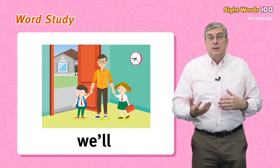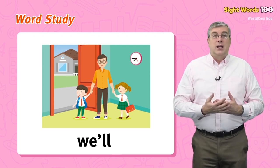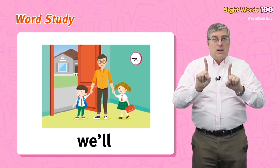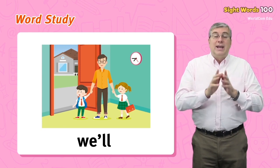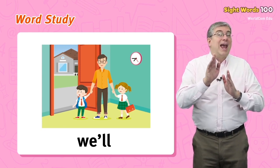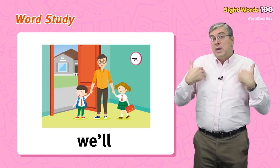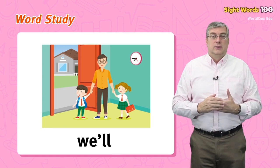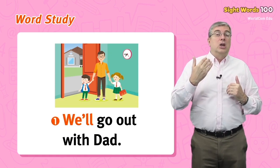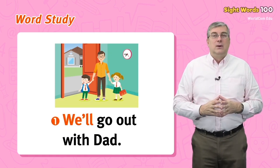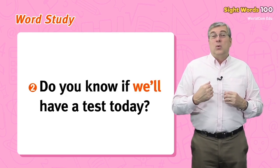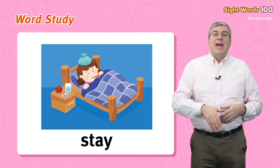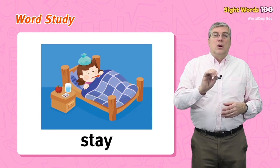The next word is we'll. This is actually a combination of two words: we and will. We use this word in front of an action word that describes what we as a group will do in the future. For example, we'll go out with dad, or do you know if we'll have a test today?